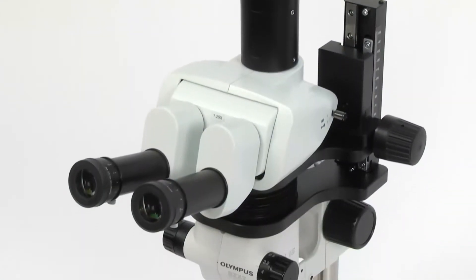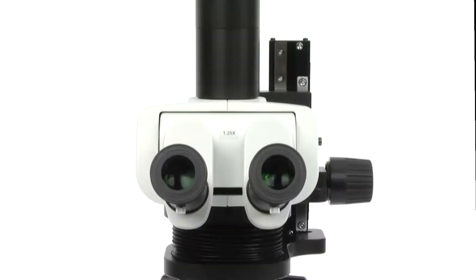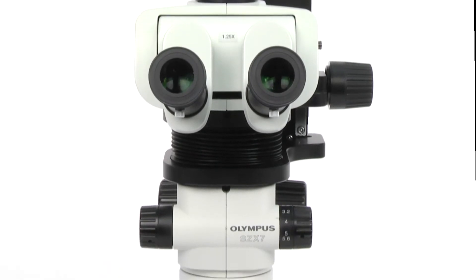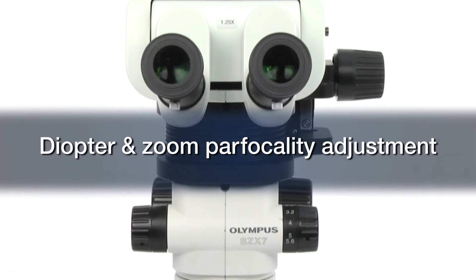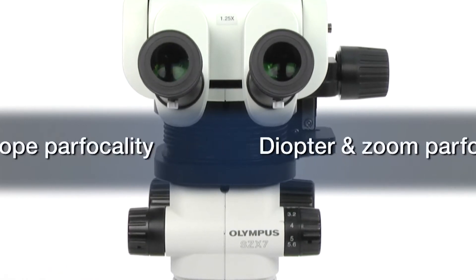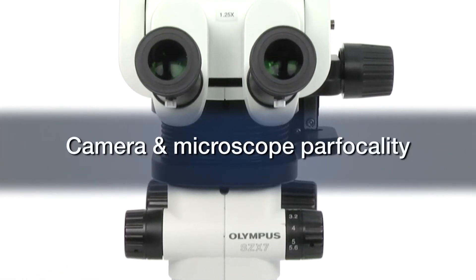For stereo microscopes, three of the most important and often overlooked elements of microscope setup are interpupillary adjustment, diopter and zoom parfocality adjustment, and camera and microscope parfocality.